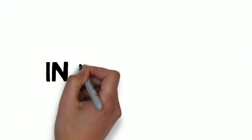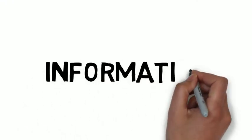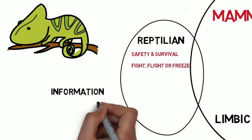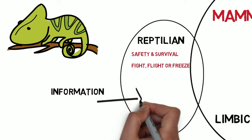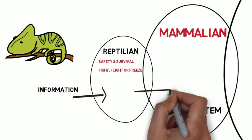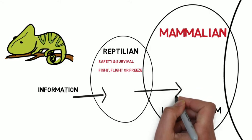Now, the interesting thing around this is that information flows in pretty much one direction. And it starts with the reptilian brain, moves into the mammalian brain, and then that moves to the prefrontal cortex.